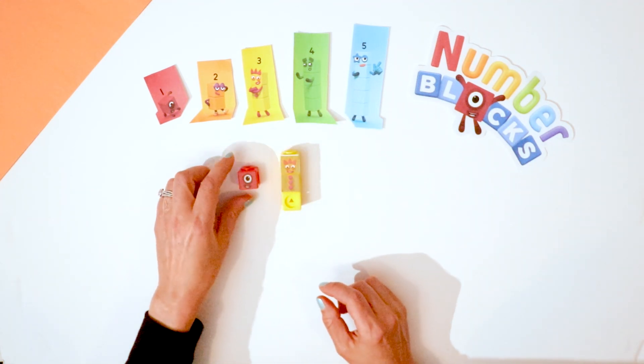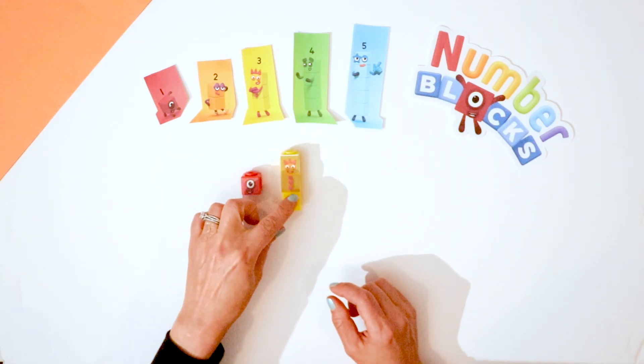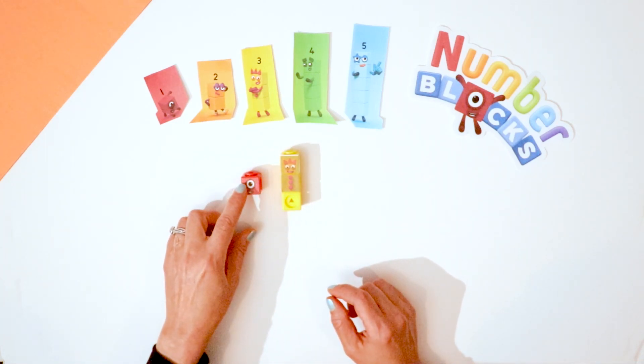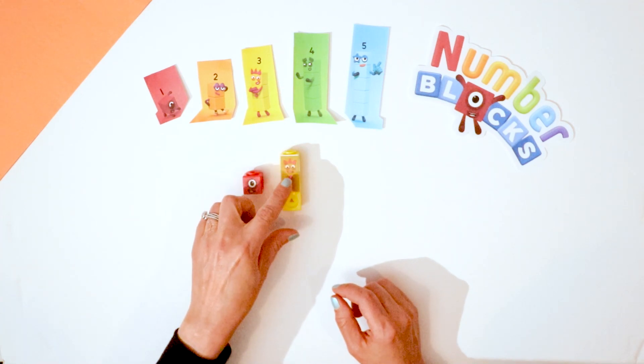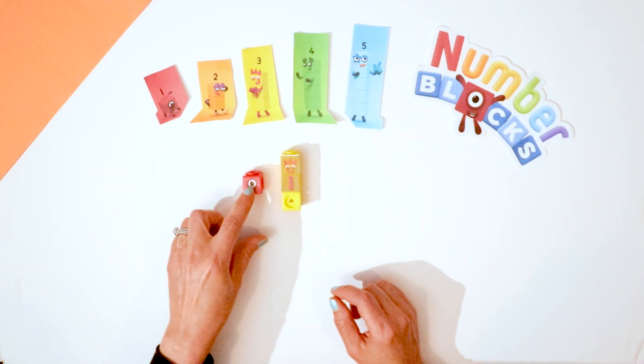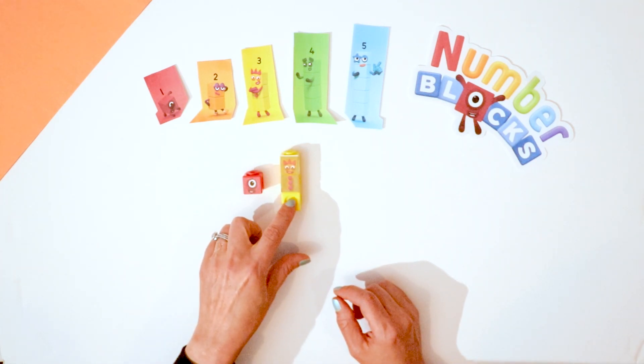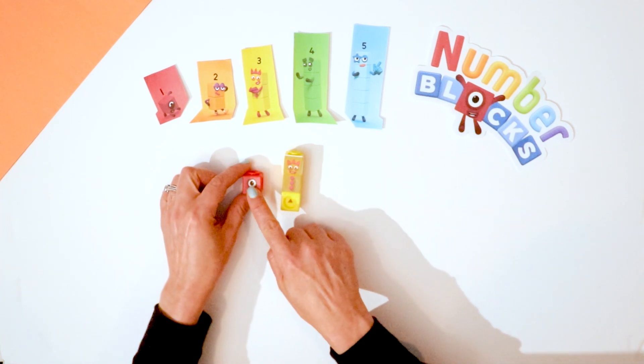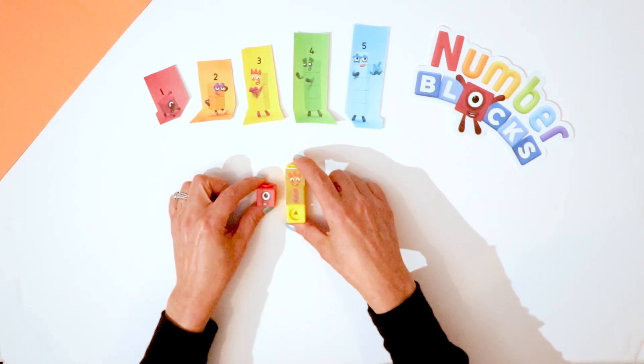One plus three equals four. One, two, three, four. One plus three equals four. One, two, three, four. Four blocks.